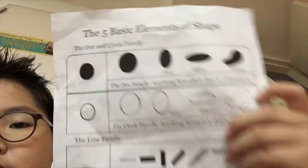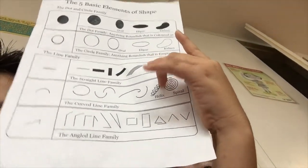Let me tell you about the five basic elements of shapes. There's the dot family, the circle family, the line family, and the curved line family.